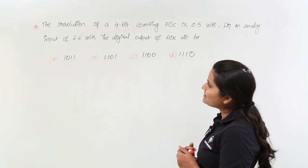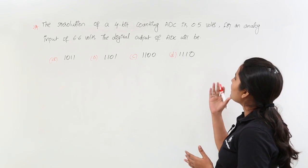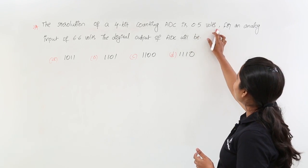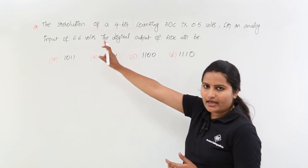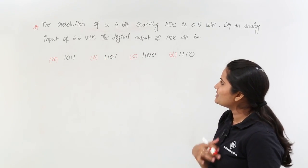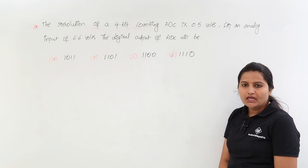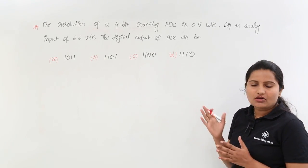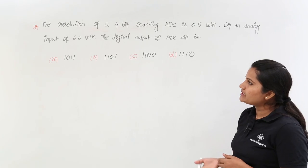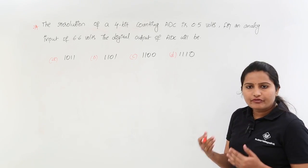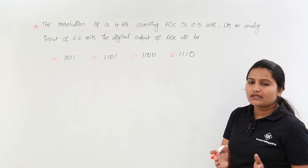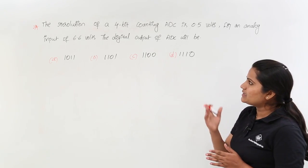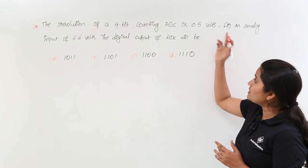The resolution of a 4-bit counting type ADC is 0.5 volts. For an analog input of 6.6 volts, the digital output of ADC will be—for example, if your analog input for this counting type ADC is 6.6 volts with the resolution of 0.5 volts...